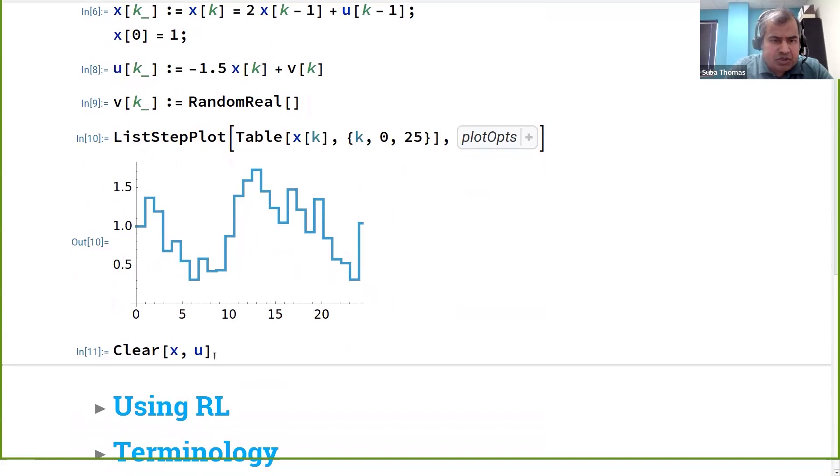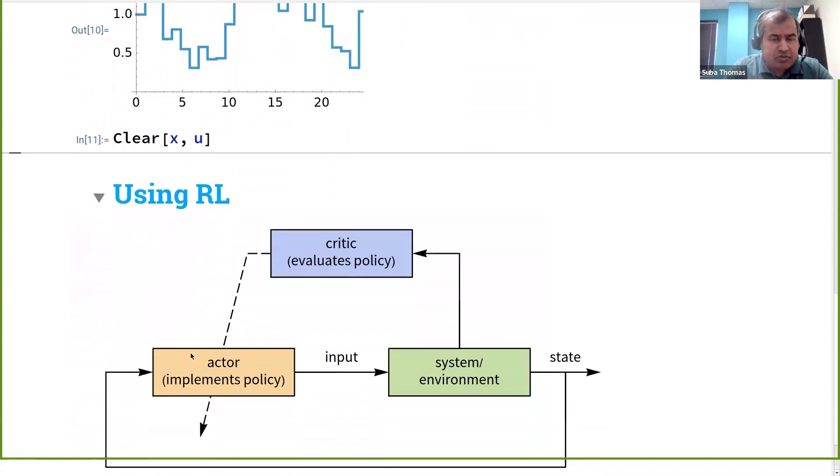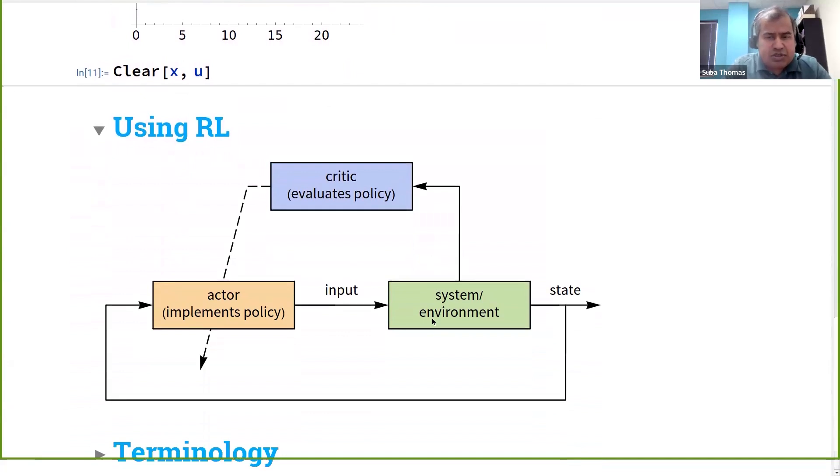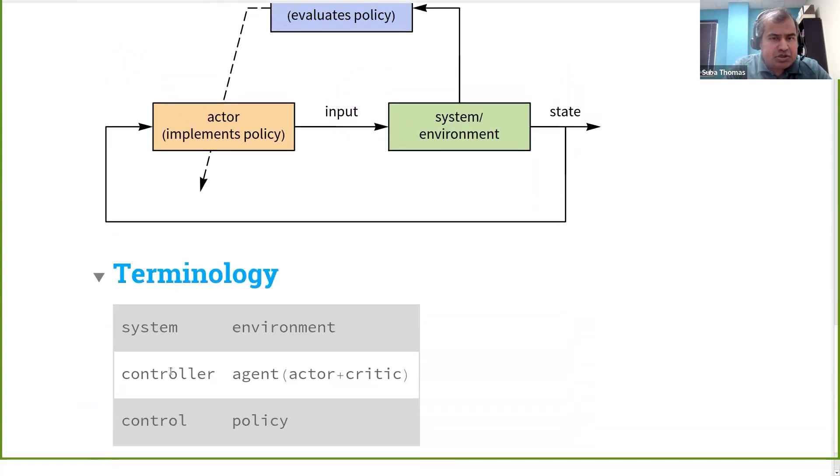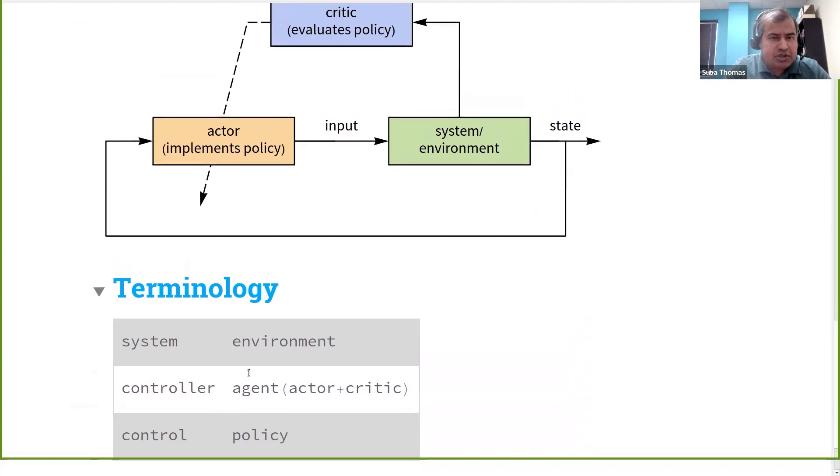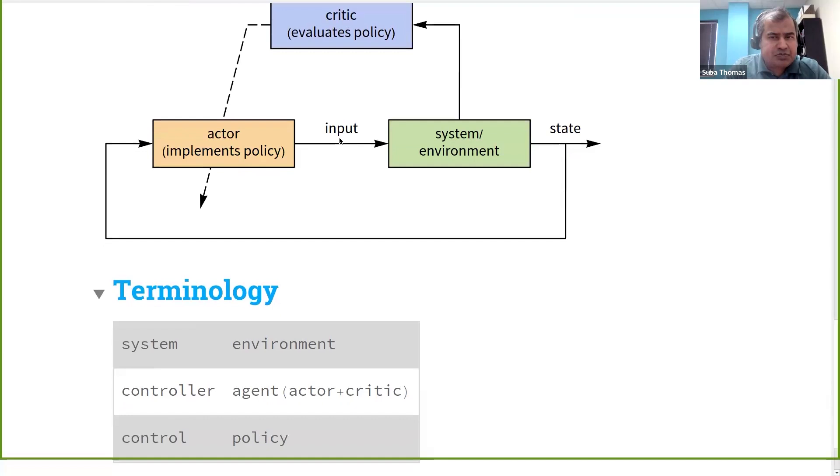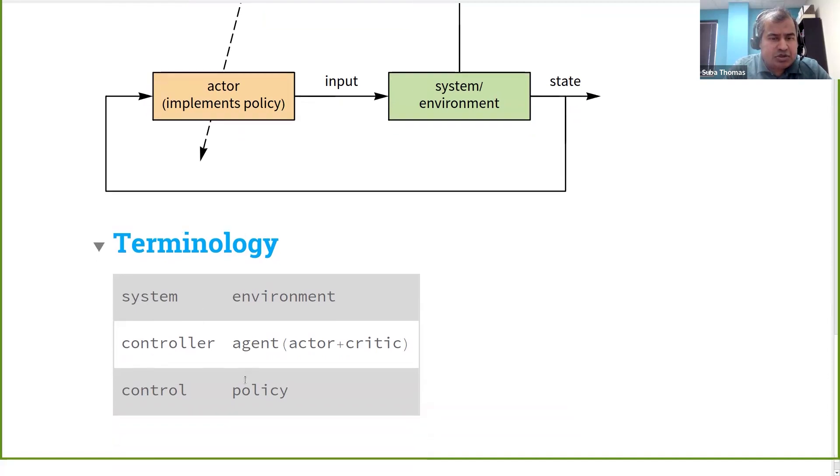When we go to reinforcement learning, the difference is that we do not have the full model of the system. I'll just give an overview here, and we'll get into the details in the next slide. Because we do not have the model of the system, we excite the system with various inputs and evaluate the response of the system. Based on that, we update what we call here the actor. In control systems and reinforcement learning, there are similar concepts, but they use different terminology. What we say as a controller in reinforcement learning is typically called an agent. The agent is a combination of this critic and actor. In control systems, we say system or plant; here it's called an environment. And the control law is called a policy in reinforcement learning.